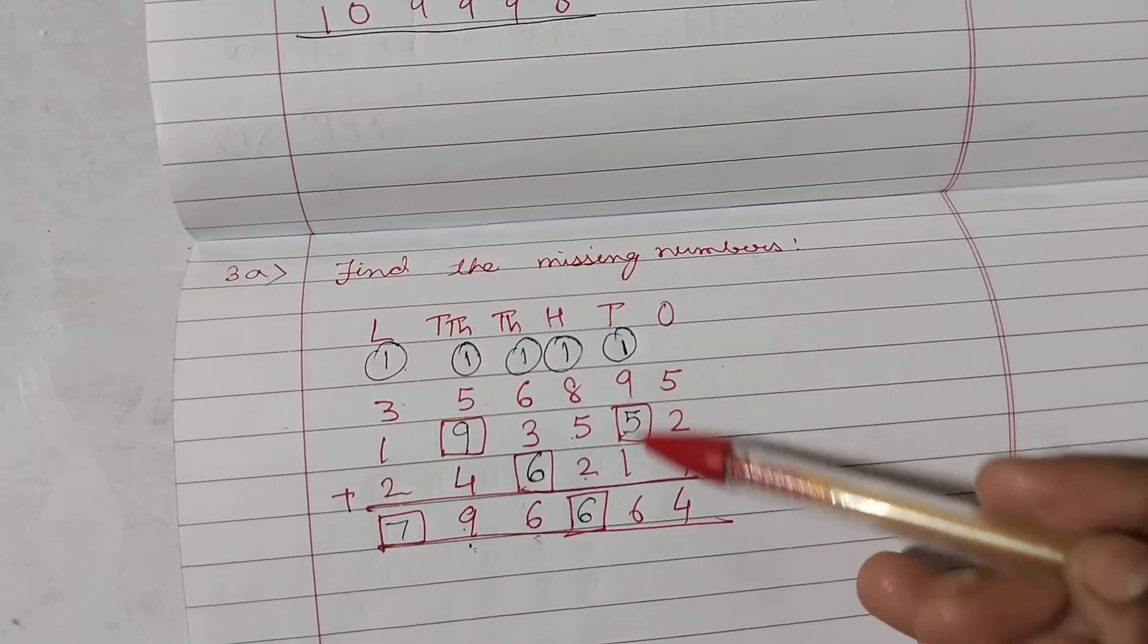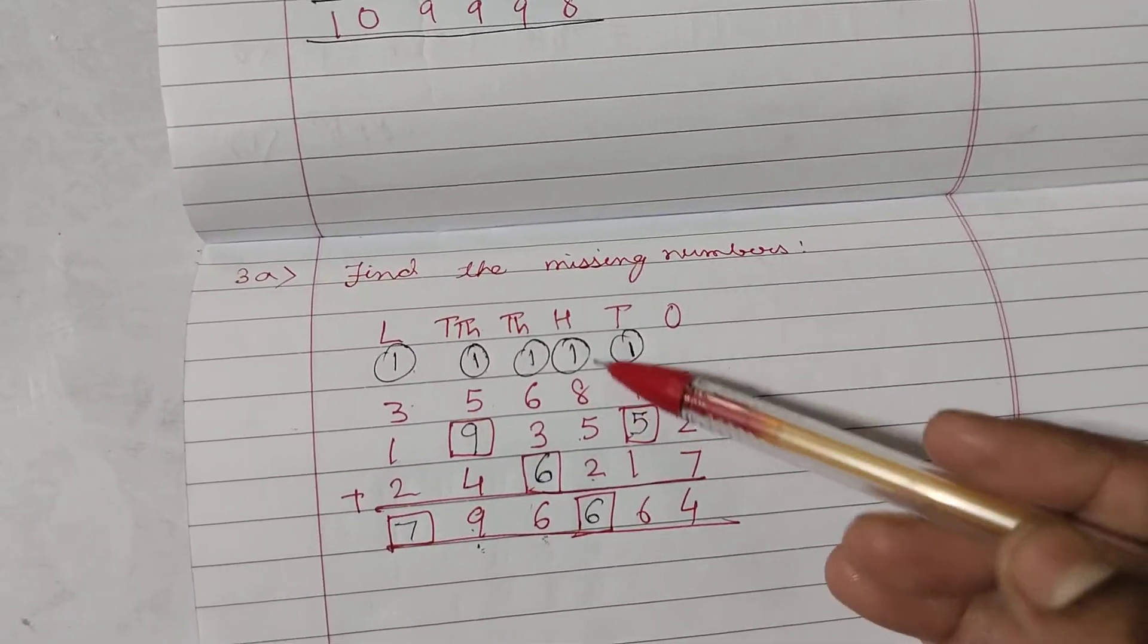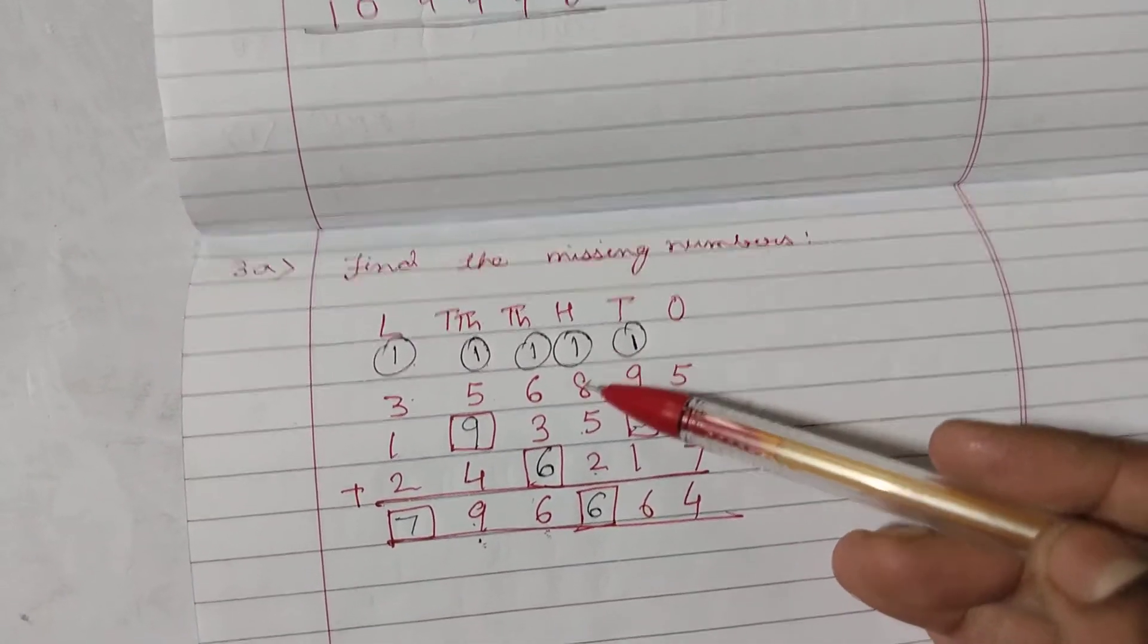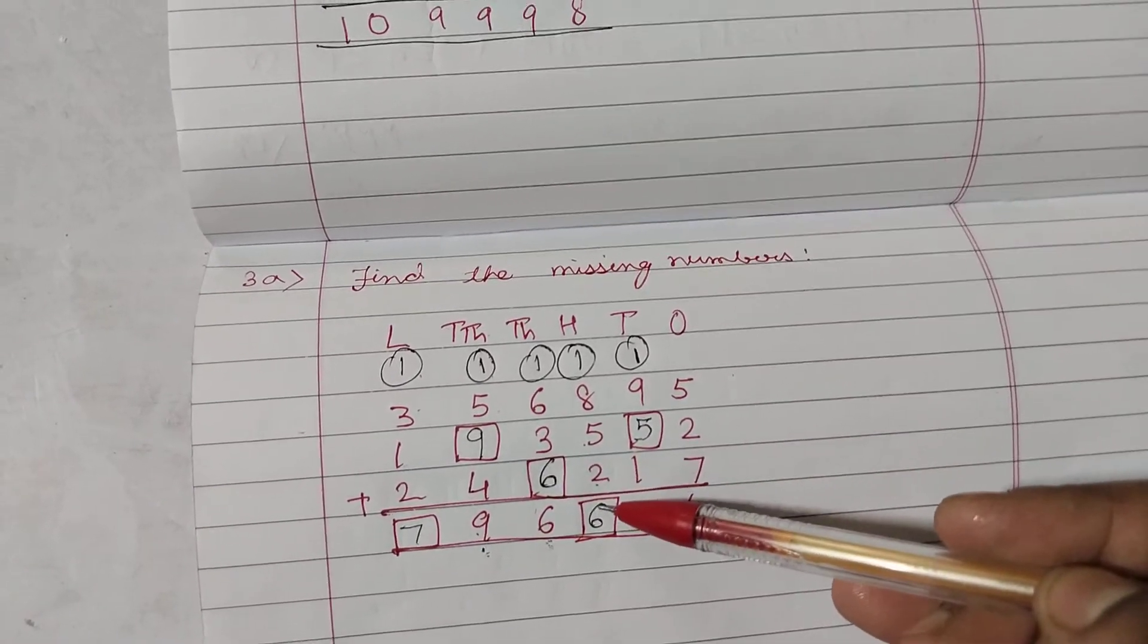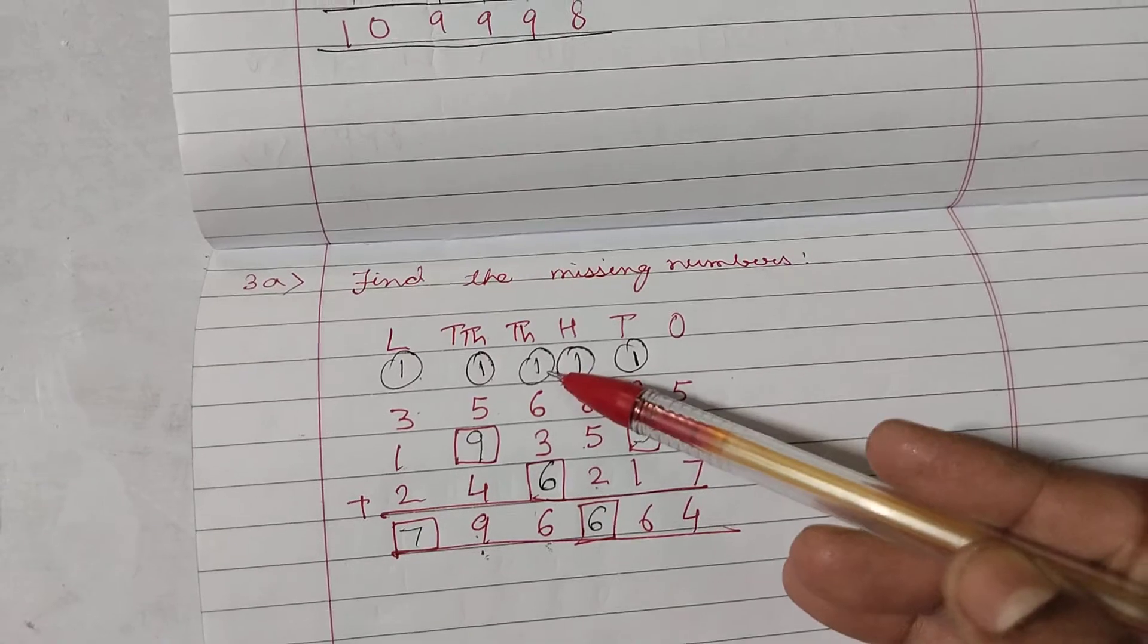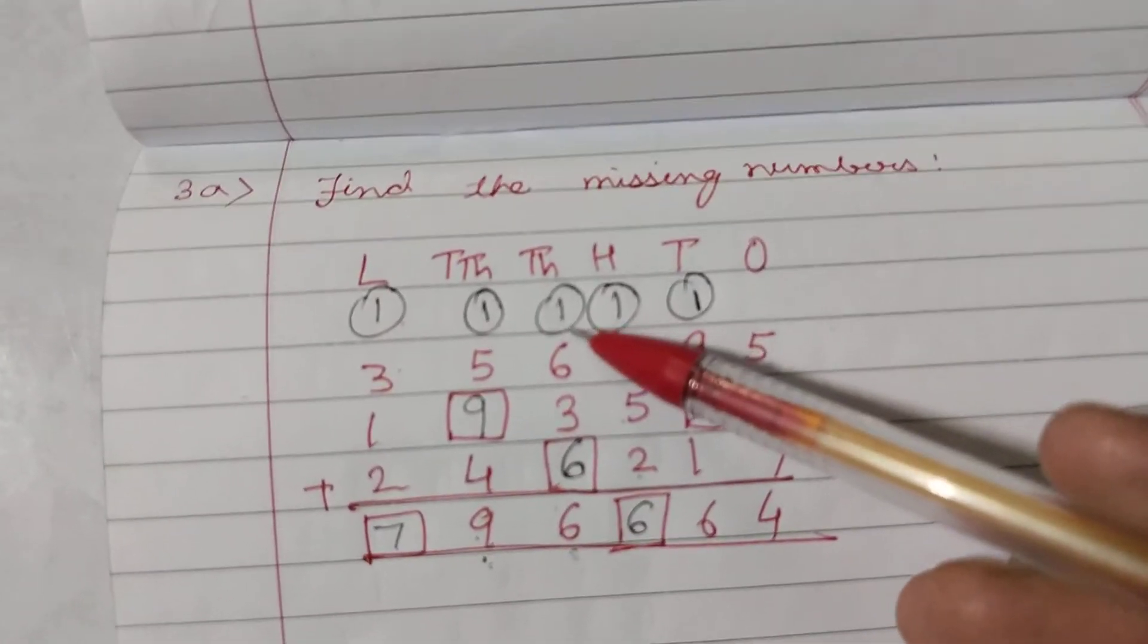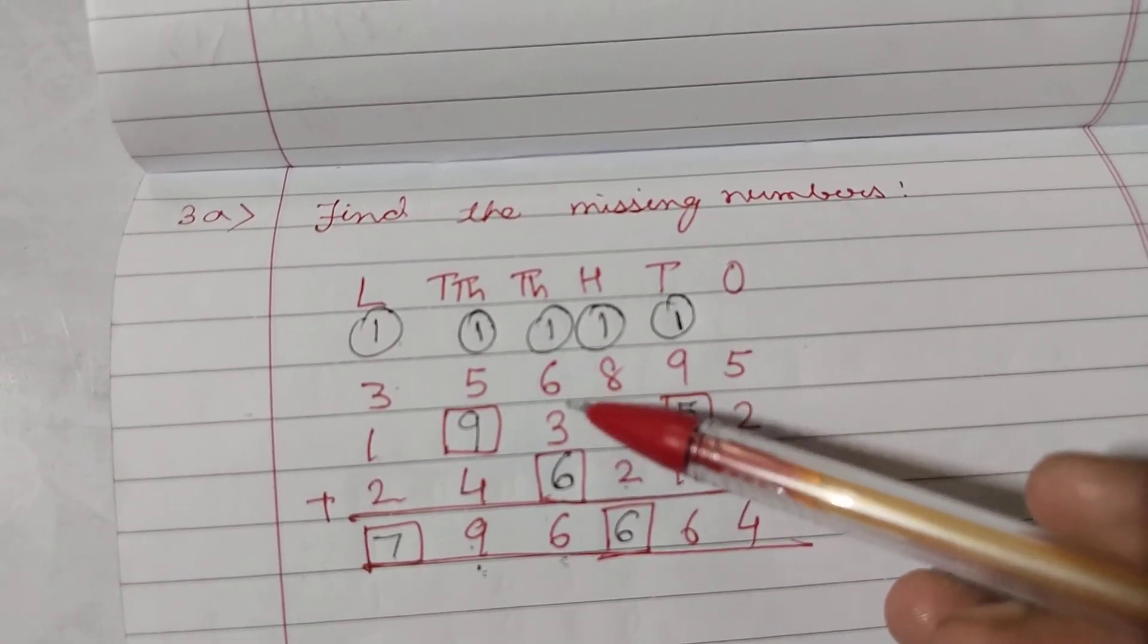Now, children, when you do addition, 16, 6 carry over 1. Now, 8 plus 1, 9. 9 plus 5, 14. 6. Write here 6, carry over 1. Again, 1 plus 6, 7 plus 3, 10. And now, you have to get 6.